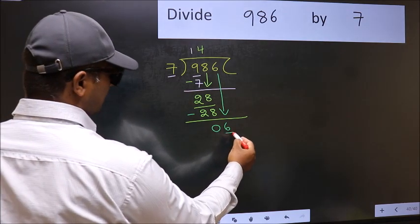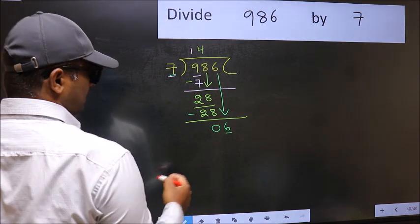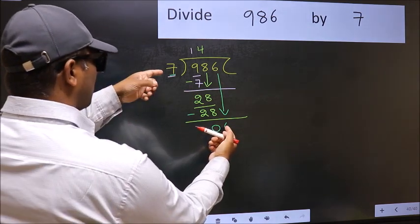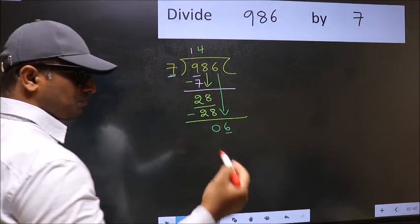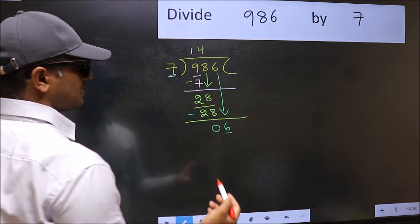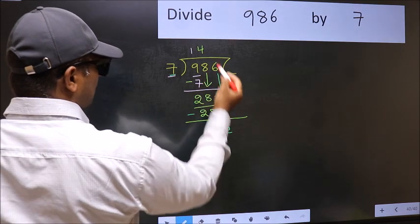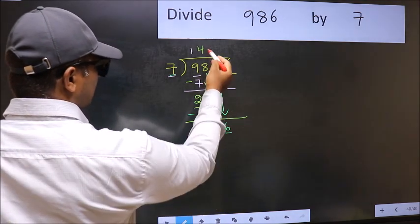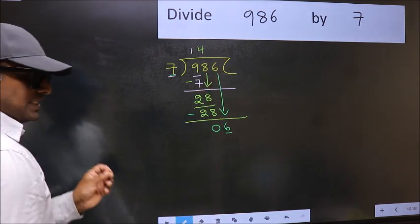Here we have 6. 6 and here 7. 6 is smaller than 7. So what many do is, they directly put dot and take 0. Which is wrong.